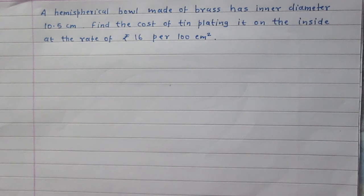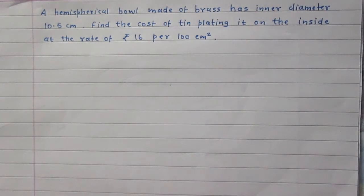A hemispherical bowl made of brass has inner diameter 10.5 centimeters. Find the cost of tin plating it on the inside at the rate of rupees 16 per hundred centimeter square. We are given a hemispherical ball and we are supposed to have tin plating inside this ball.